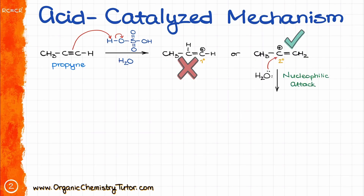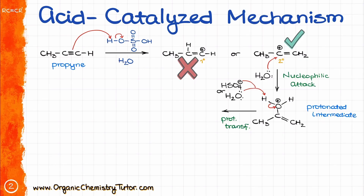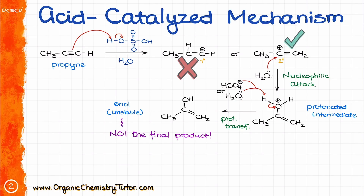The next step is going to be the nucleophilic attack, and the nucleophile in this case is naturally going to be water. This gives me the protonated intermediate, which we will promptly deprotonate with either another equivalent of water or the conjugate base of the sulfuric acid that we used at the very beginning of this reaction, yielding the enol product.